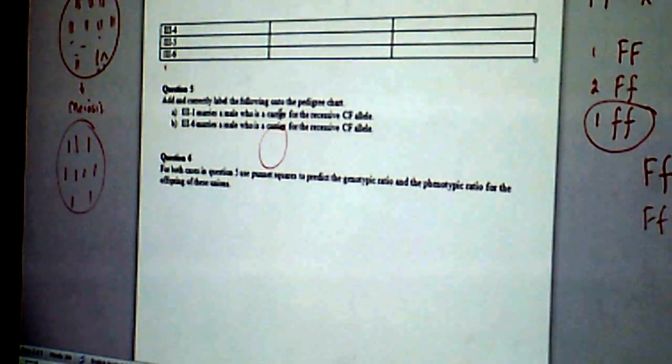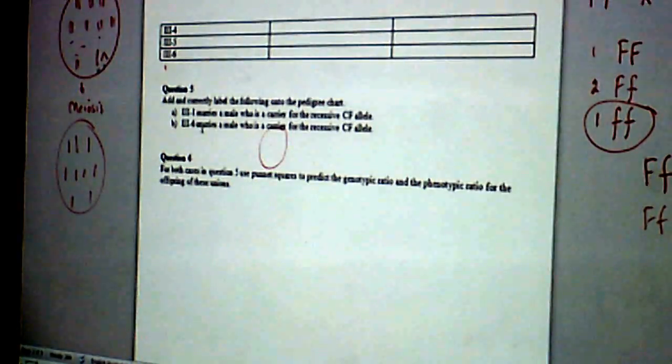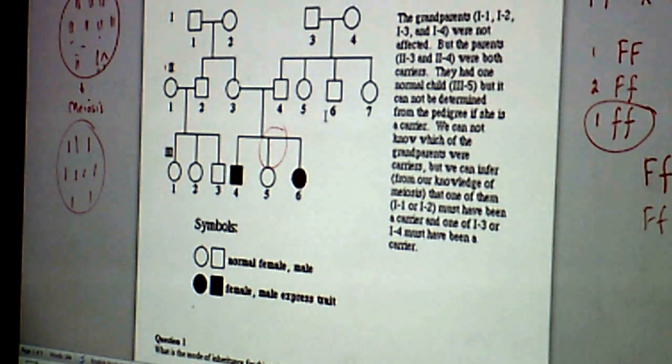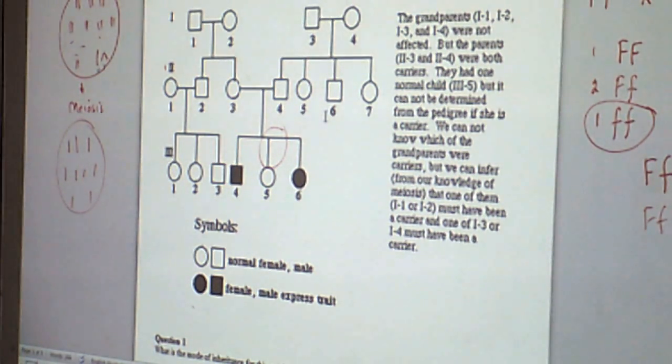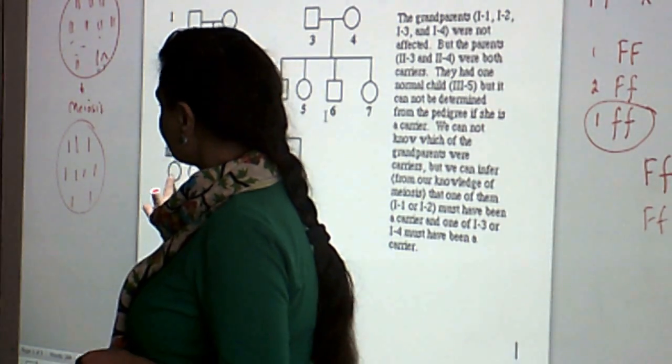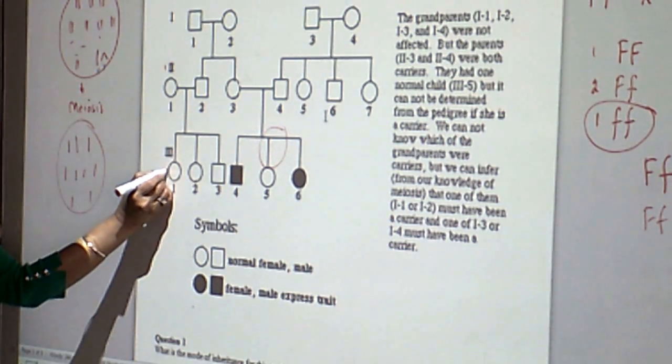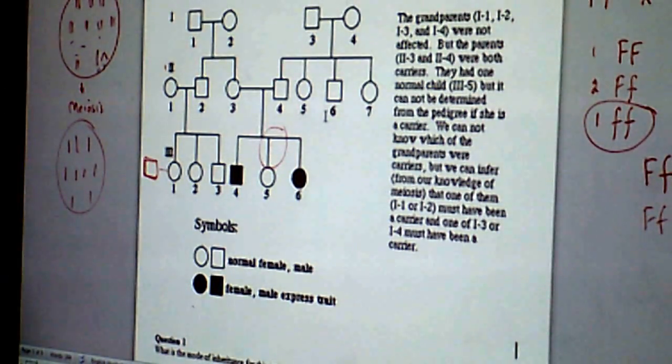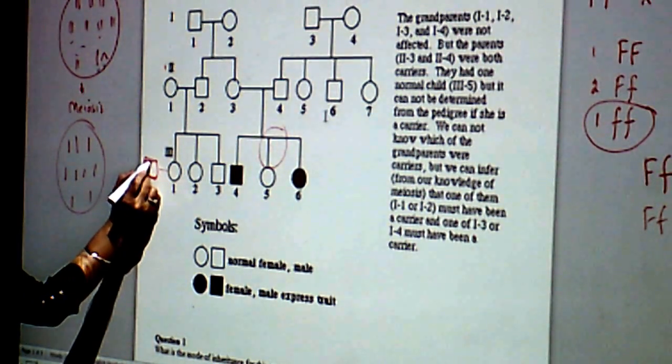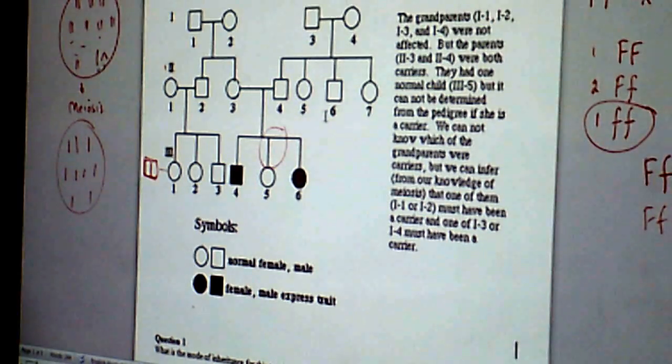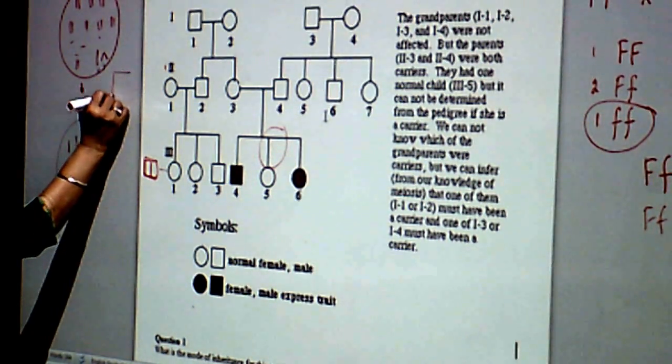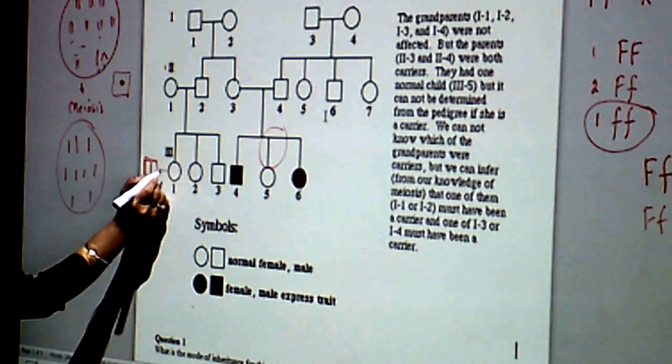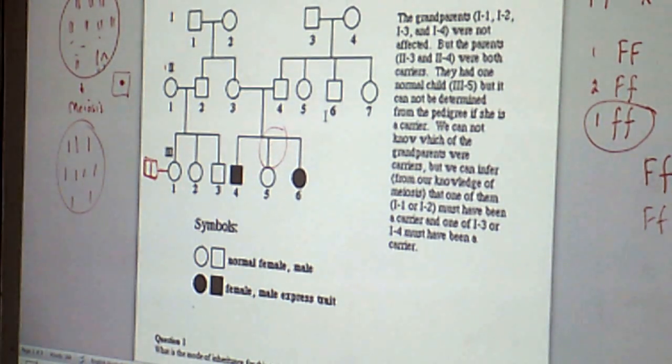And then in the last part of the question, add and correctly label the following onto the pedigree chart. 3-1 marries a male who's a carrier for the recessive allele. So then what we have to do is 3-1 is this one over here, marries a male who is a carrier. Because we've been asked to do that, now we can put a symbol here for them being a carrier. Either this or we can show it like that. So 3-1 marries a person who's a carrier, just do that and we get the mark.